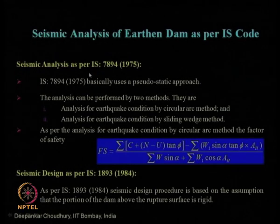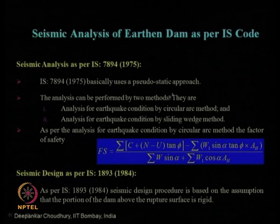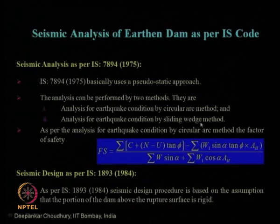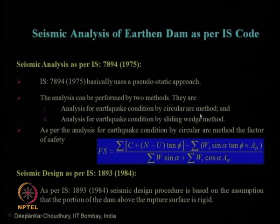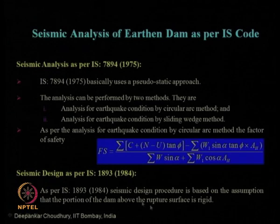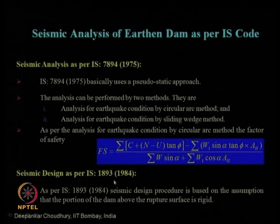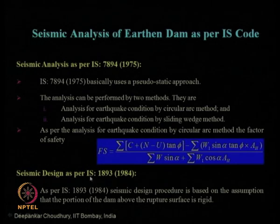As per the Indian seismic design code IS 7894 of 1975, the pseudo-static approach is suggested for seismic design of earthen dams. Two basic methods can be performed: the circular arc method and the sliding wedge method. The sliding wedge method is the numerous block method, and the circular arc method is similar to the modified Swedish circle method or vertical slice equilibrium approach. This is the factor of safety for the circular arc method using the pseudo-static approach, and for IS 1893 of 1984, the analysis needs to be carried out based on the assumption of the dam portion and rupture surface.